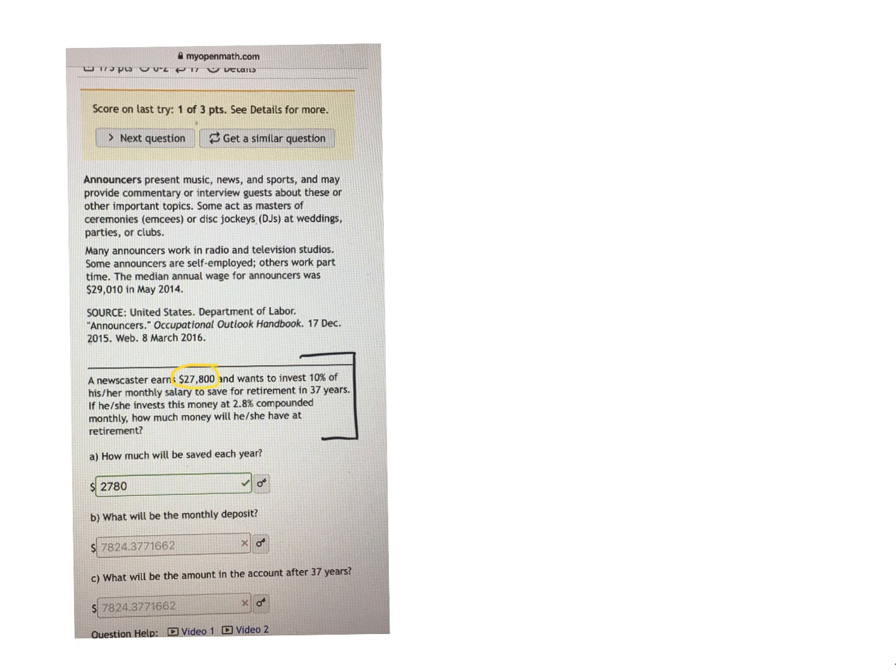It says that they earn $27,800 annually, and they want to invest 10% of that to save for retirement. So 10% of that $27,800, you find that by taking 0.10 times $27,800, which really is just moving the decimal point over, and you would get $2,780, because it's really dividing by 10.